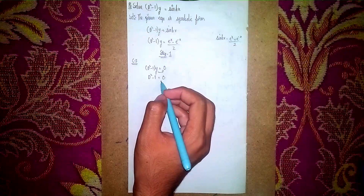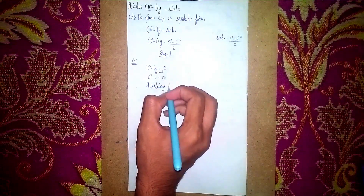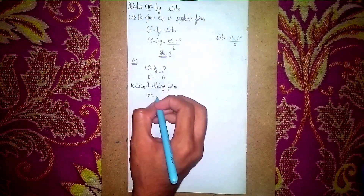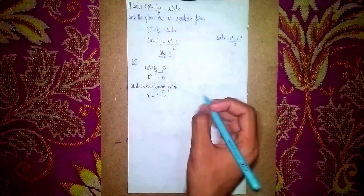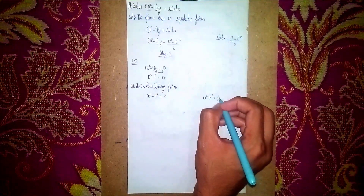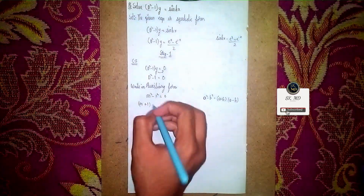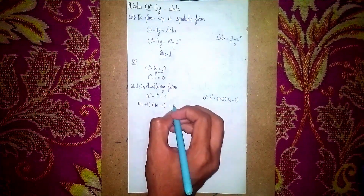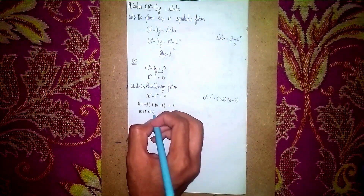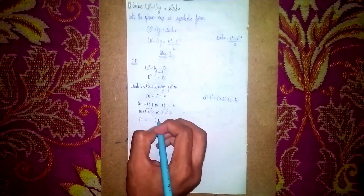Write in auxiliary form: replace D with m, so m² - 1 = 0. This is in the form a² - b², which factors as (m + 1)(m - 1) = 0. Setting each factor equal to zero gives m + 1 = 0 and m - 1 = 0, so m₁ = -1 and m₂ = +1.